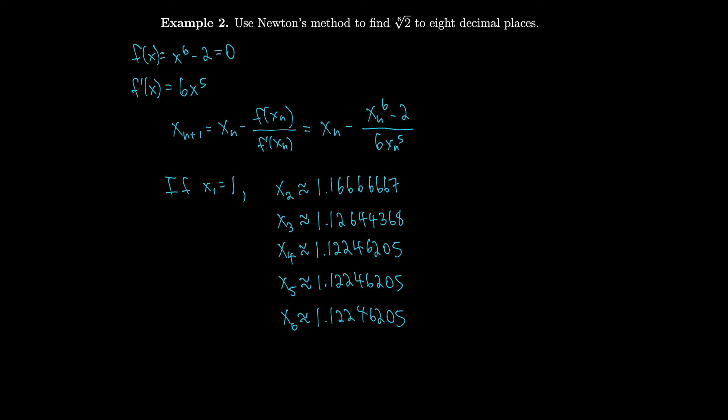Since those agreed to eight decimal places, we say that the sixth root of two is approximately 1.12246205, accurate to within eight decimal places.